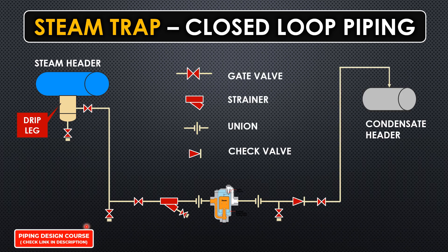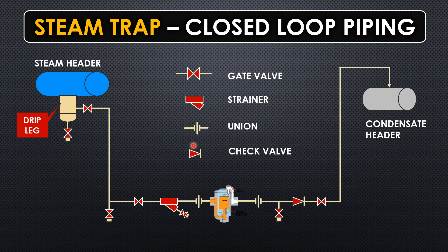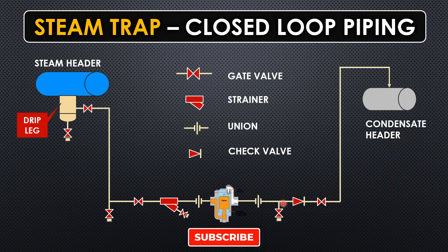Now let's go to the closed loop system. In a closed loop system, the line goes back to the condensate header rather than the trench. There is an additional component — a check valve — installed before the isolation valve. This is to protect against backflow: if there is no check valve, condensate could flow back. The check valve prevents flow from the opposite direction. The closed loop also requires a drip leg, strainer, unions on both sides of the steam trap, drains, and isolation valves.